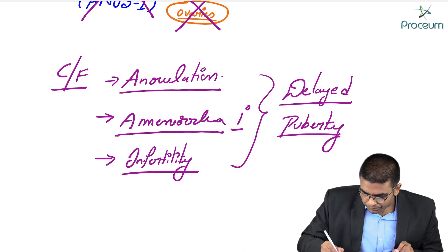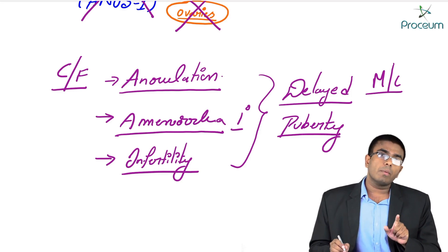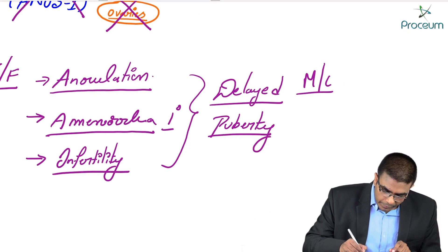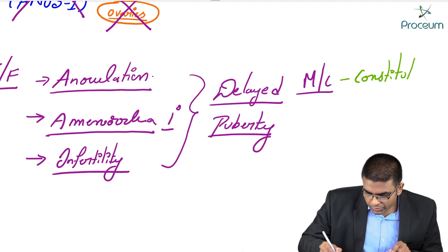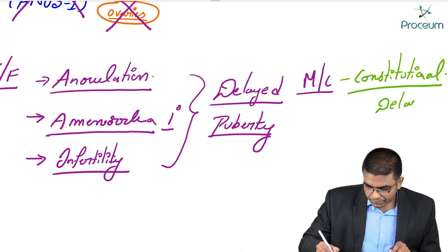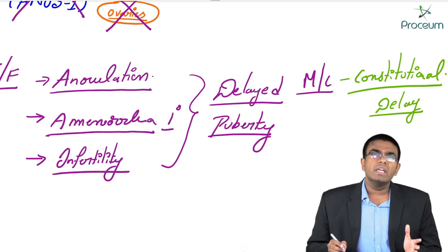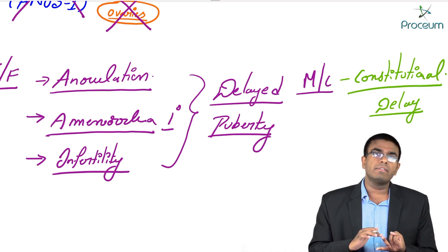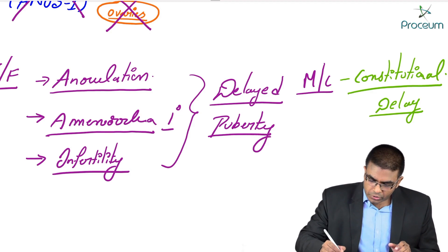Most important MCQ: What is the most common cause of delayed puberty? The most common cause of delayed puberty is not Kallmann syndrome — it is constitutional delay. Constitutional delay means not only the reproductive functions but also the entire height, weight, and everything is generally delayed.